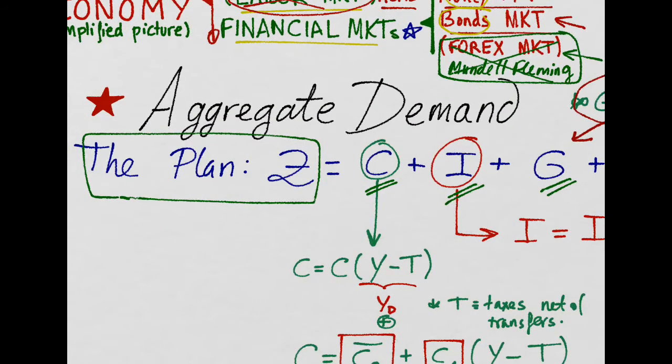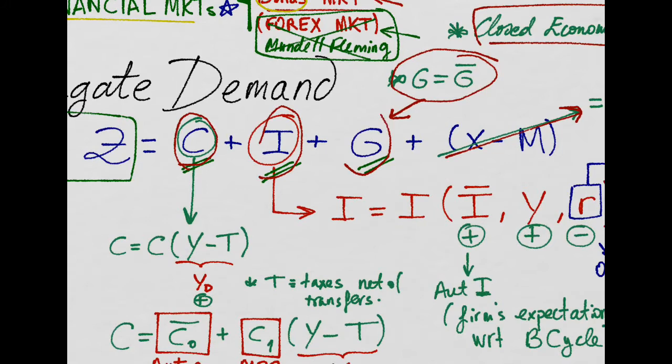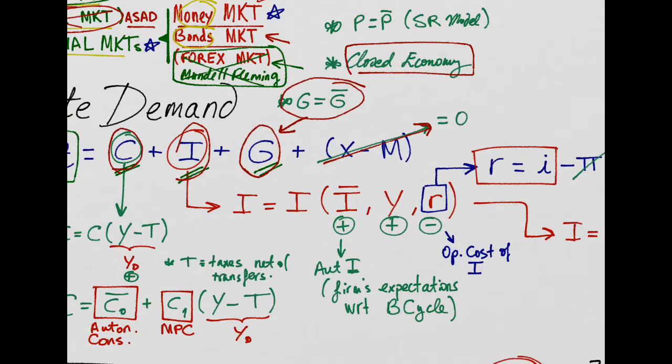We want to analyze what the planned aggregate demand for goods is going to be in this economy. The planned aggregate demand in this economy is equal to consumption by households, investment by firms, and government expenditure. Since we are assuming we are in a closed economy, there will be no net exports. Also, we take government expenditure as something given, as something exogenous.